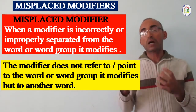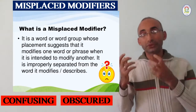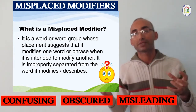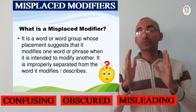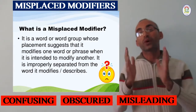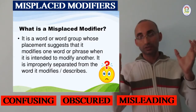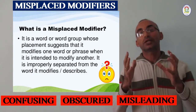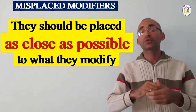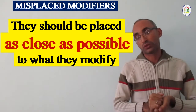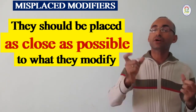This will make our sentence obscure, confusing, and also misleading to the reader. That's why we need to pay attention very carefully to where we should place our modifiers and respect the basic rule which says they should be placed as close as possible to the word they modify, with regard to the type of every modifier, whether adjective or adverb.